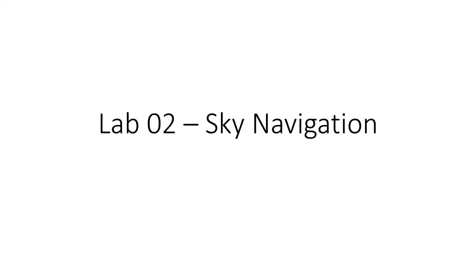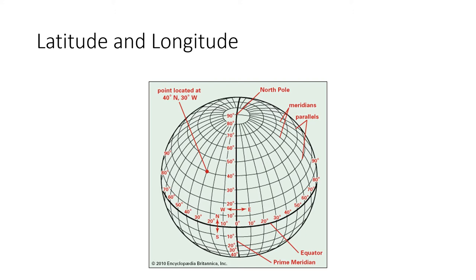Hello and welcome to Lab 2. We're going to talk about sky navigation really quick. Here is a little review about latitude and longitude — we discussed it a bit in the write-up, but here is an image so I can show you. We have the equator on the Earth, and we count degrees around the equator and up to the North Pole. So this point right here is 40 degrees north, 30 degrees west, which allows us to find anything on the planet.